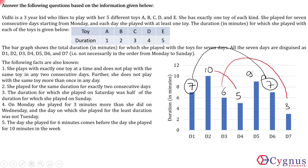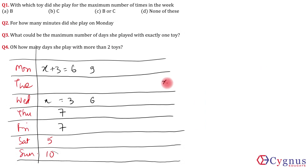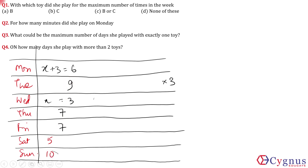The fourth condition: the day she played for the least duration was not Tuesday. The least duration is 3 minutes, so she did not play for 3 minutes on Tuesday. Looking at the case Wednesday=6 and Monday=9: placing the remaining value 3 on Tuesday is forced, but 3 cannot be on Tuesday. So that case is rejected. The valid assignment is: Monday=6, Tuesday=9, Wednesday=3, Thursday=7, Friday=7, Saturday=5, Sunday=10. The remaining value 9 fills Tuesday.